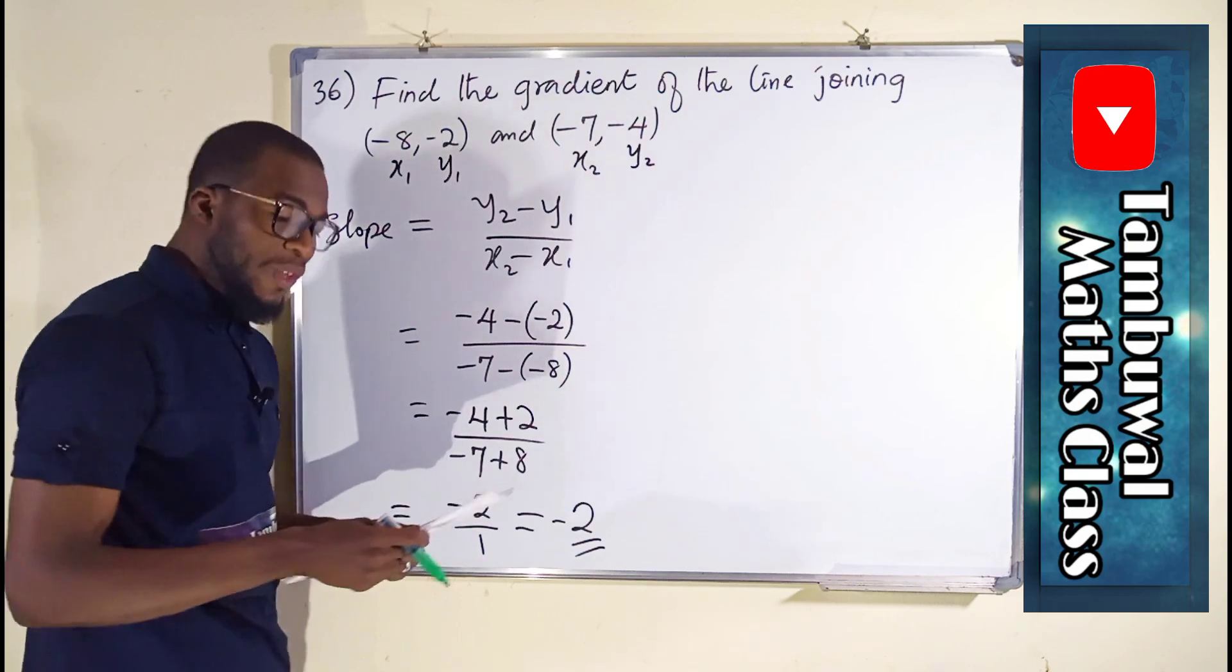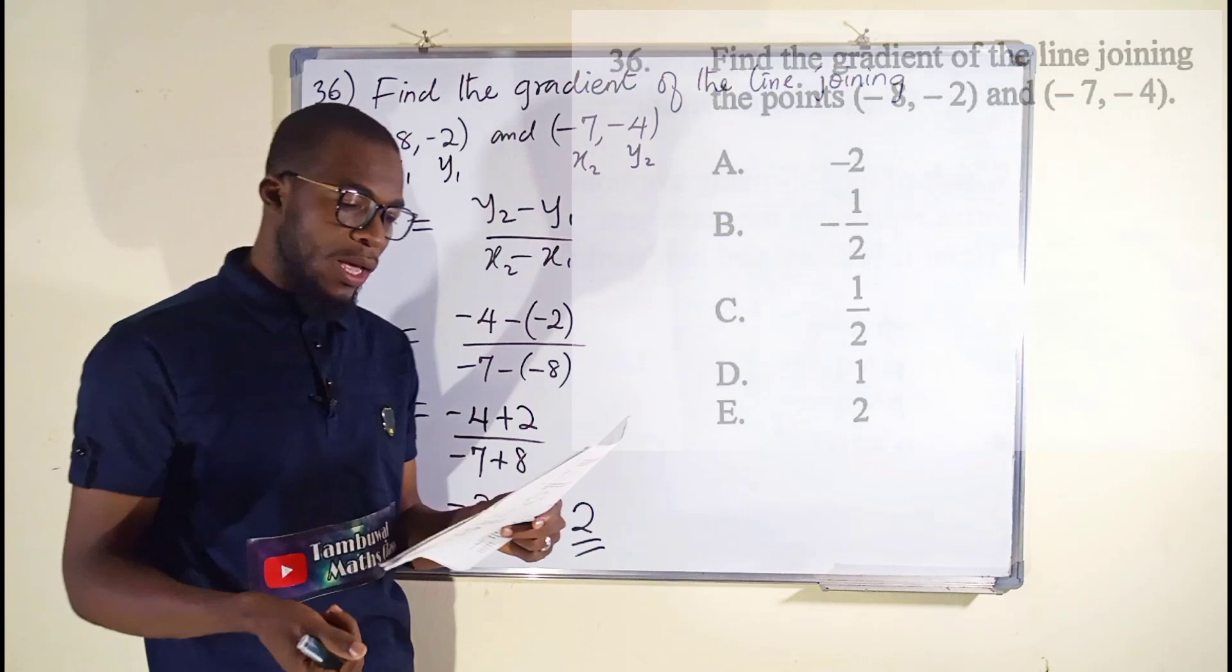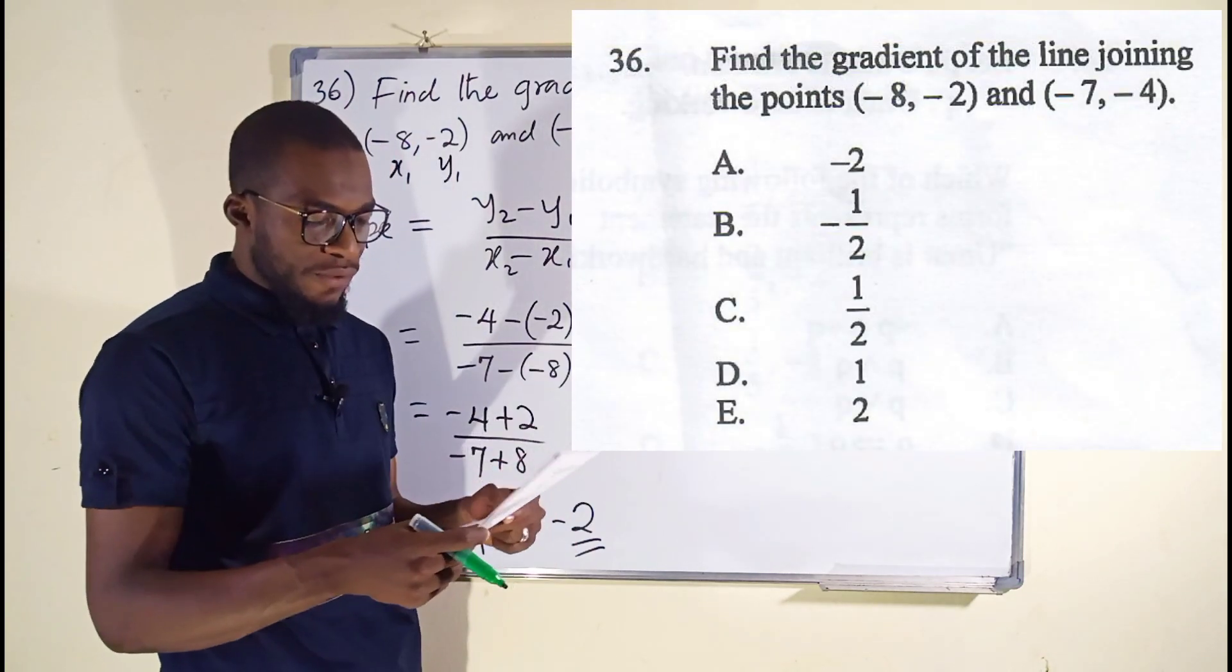So our slope is negative. This is negative slope, which is negative 2, and it's option A here. Now let us move on to question number 37.